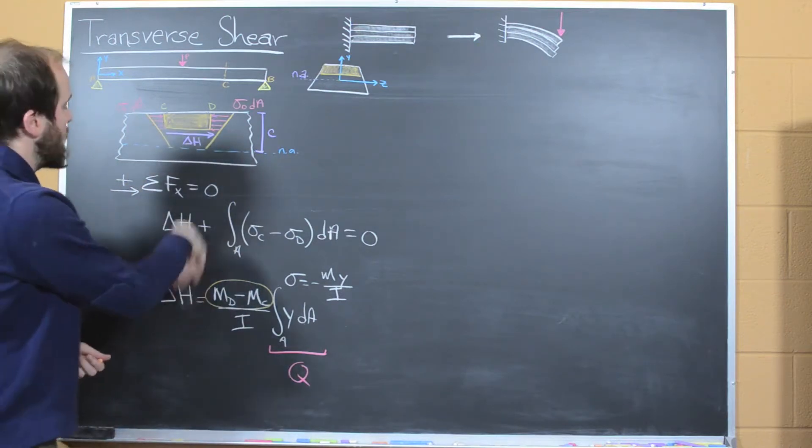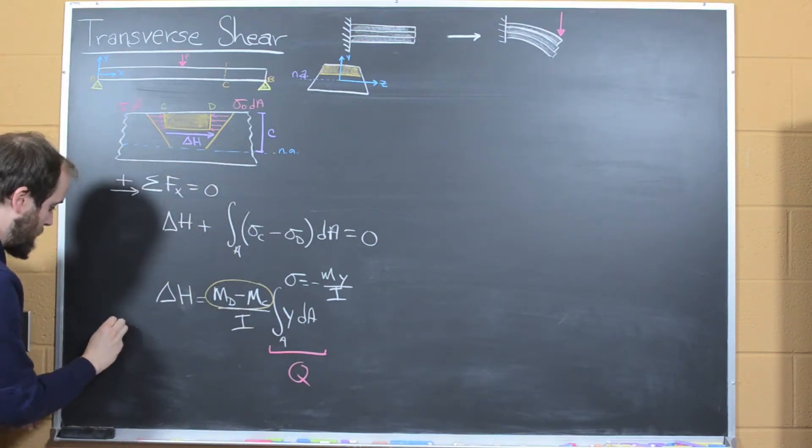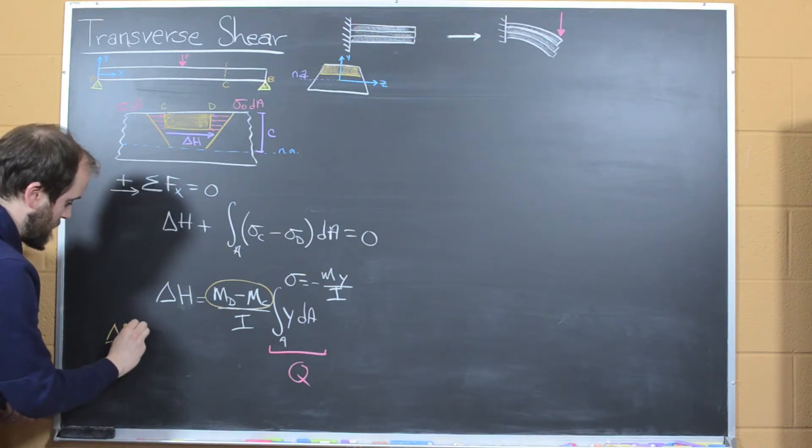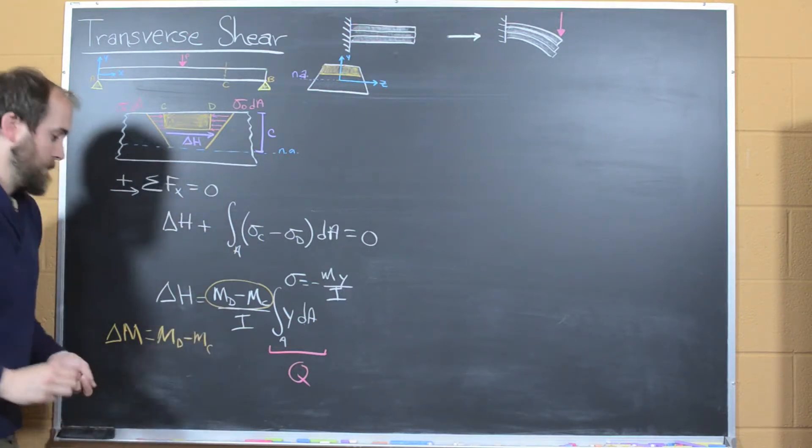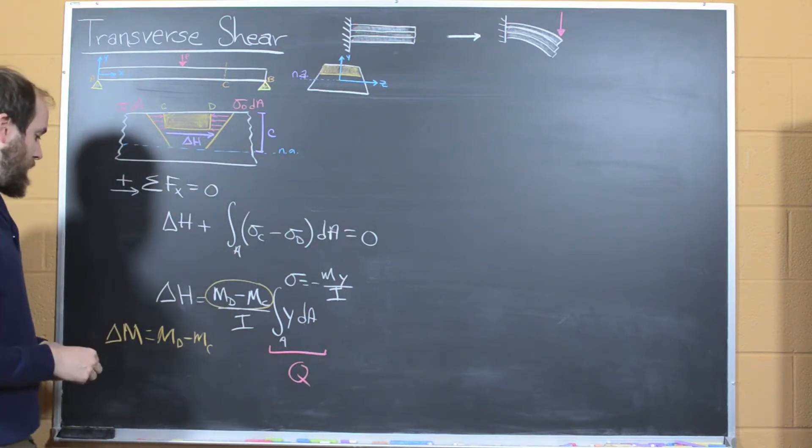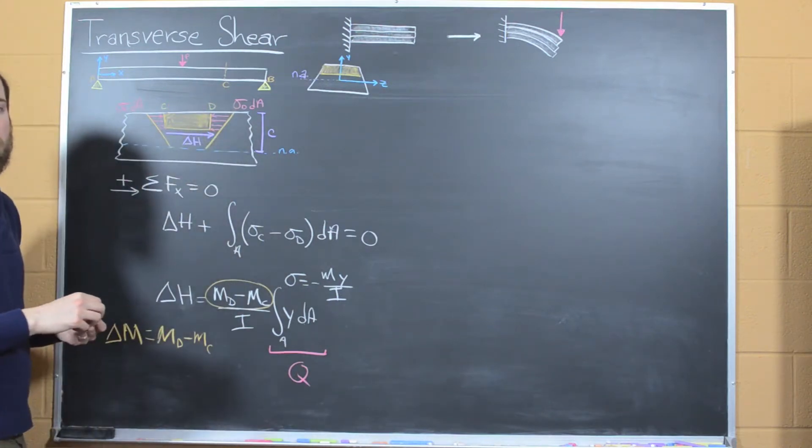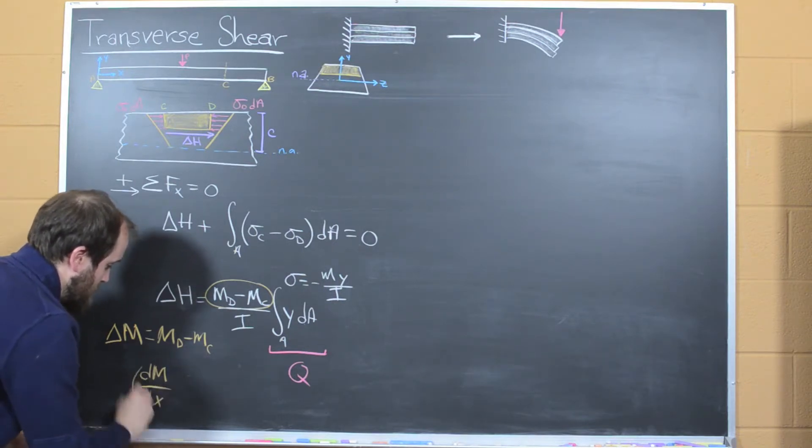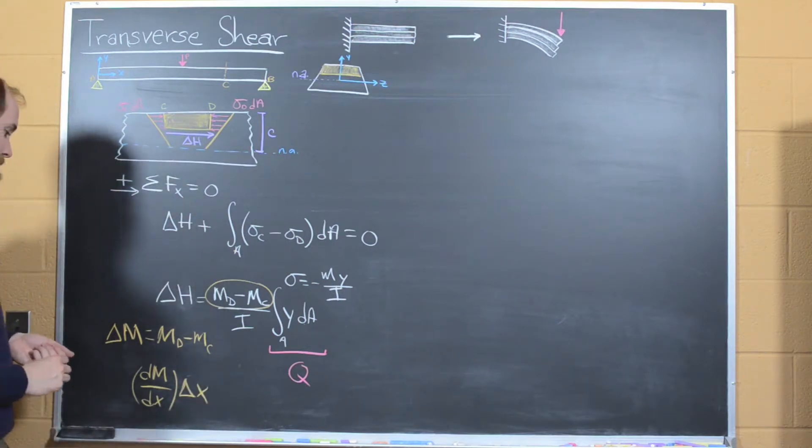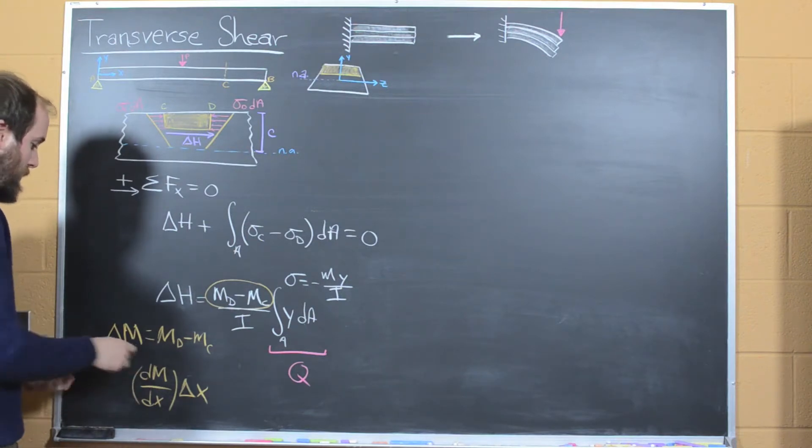The second thing we can notice is what's going on up here. What we have here is the difference between the moment at point D and the moment at point C. And so that can equal delta M. And that delta M, if we think about this as acting over the element delta X, which is this element that we're looking at here, this is going to simply reduce to dM/dx, so the infinitesimally small amount times dx.